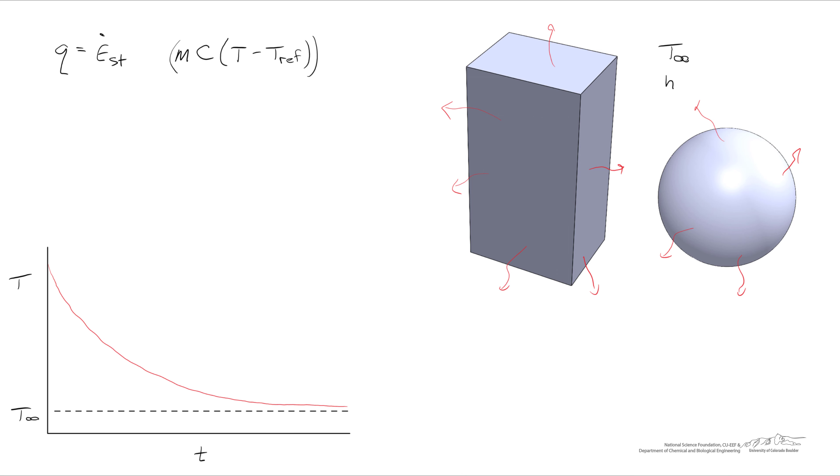To figure out the rate at which the heat is being stored, we're going to differentiate this with respect to time. The mass of the object is its density multiplied by its volume. So we've got rho times V, the heat capacity we're going to assume is independent of temperature. The reference temperature is just some arbitrary constant value, so we're left with the density times the volume times the heat capacity times the time rate of change of temperature.